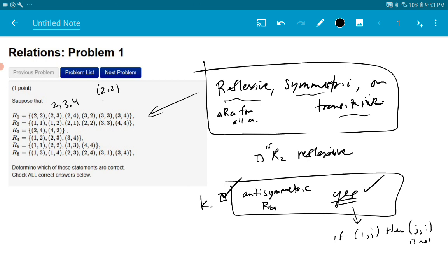The only things in R1 are 2, 3, and 4. Does that make sense? There are no other numbers in R1. So we have to ask ourselves, to be reflexive, 2,2 has to be there, 3,3 has to be there, and 4,4 has to be there. Are they all there? It's got 2,2. It's got 3,3, but it doesn't have 4,4. So R1 is not reflexive.